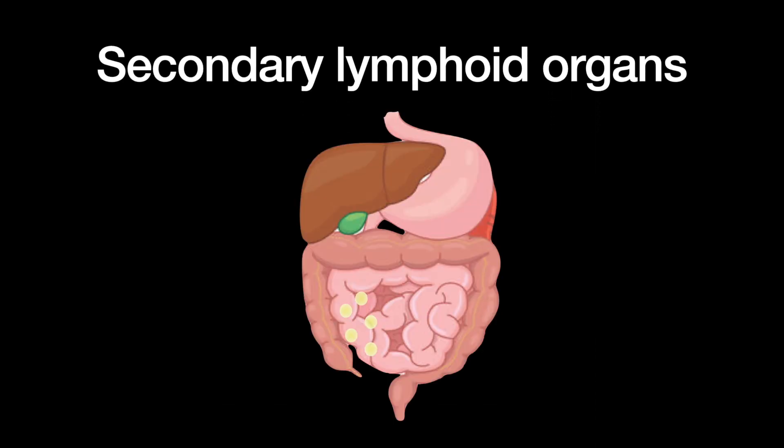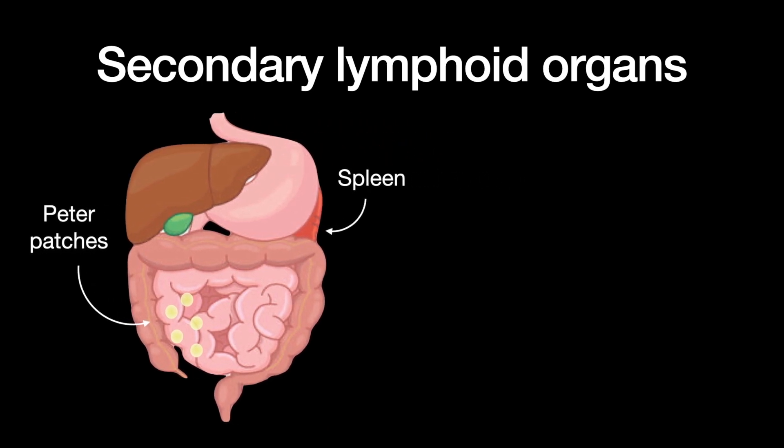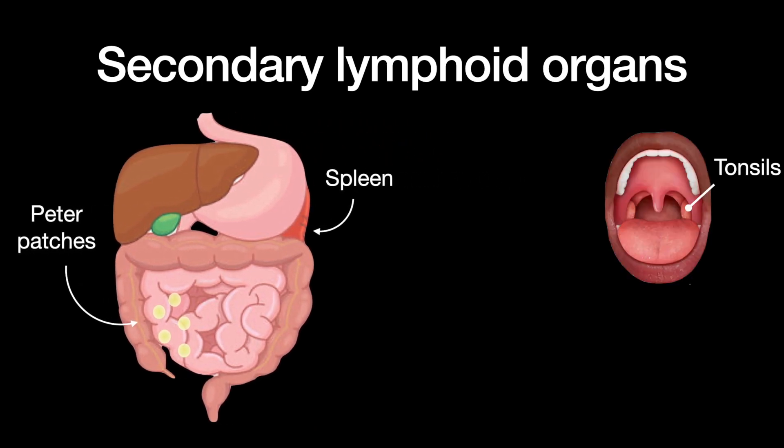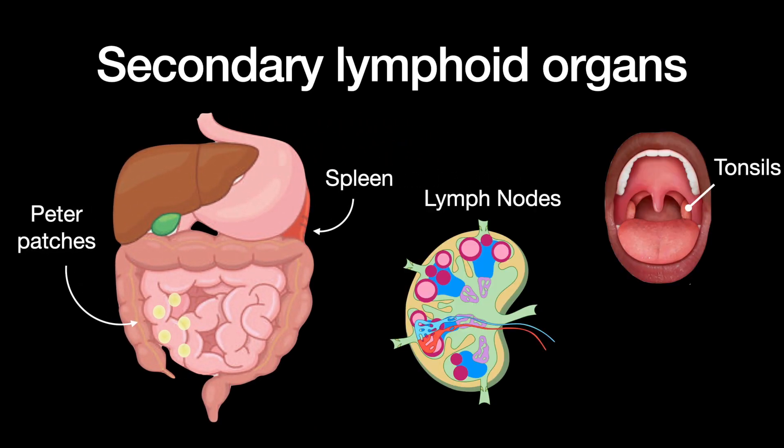The secondary lymphoid organs include the Peyer's patches, spleen, tonsils, and lymph nodes.